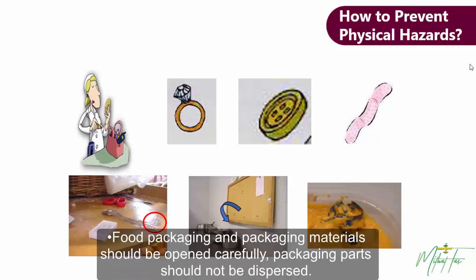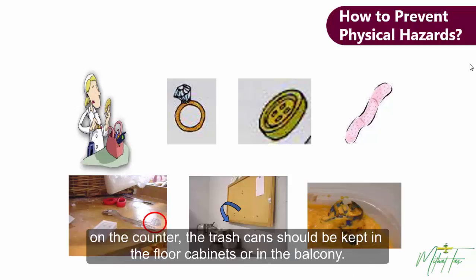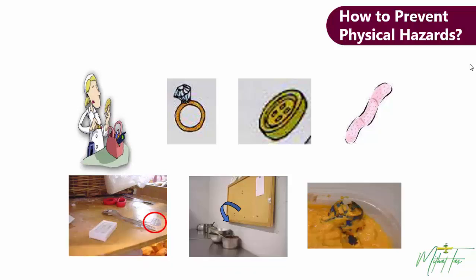Food packaging and packaging materials should be opened carefully, and packaging parts should not be dispersed. The trash can must be half-capped. If possible, there shouldn't be any trash can on the counter. The trash cans should be kept in the floor cabinets or in the balcony.